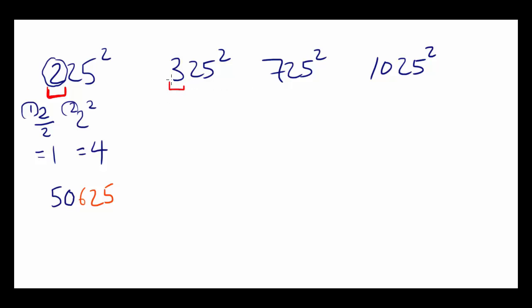325 squared. Well, first, 3 over 2 gives you 1.5. Second thing, 3 squared gives you 9. What happens when you add them up? You get 10.5. Since you're multiplying by 10, that gives you 105. And in the end, you always put 625.